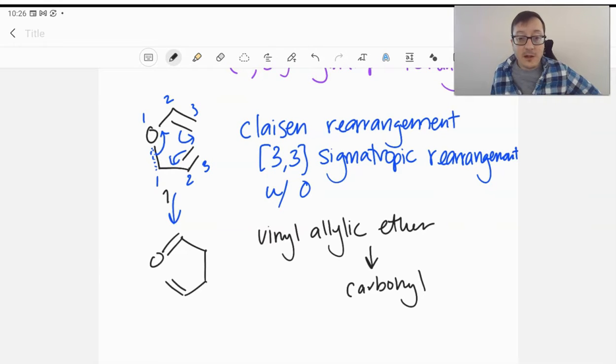That's very favorable. And so as a result of this rearrangement, we've stabilized our molecule and we're going to end up preferring that product. Carbonyls are always more stable than CC double bonds, so those are very favorable for Claisens.